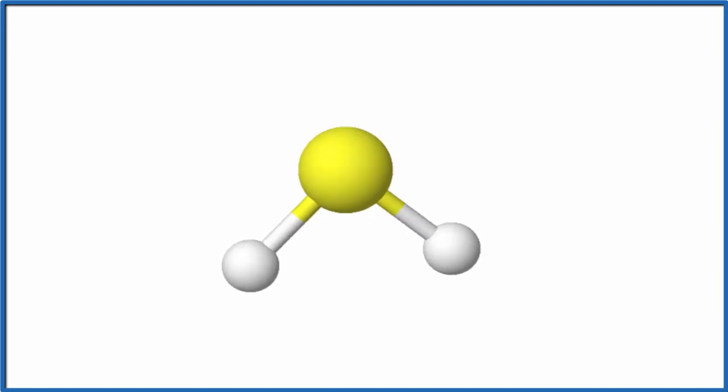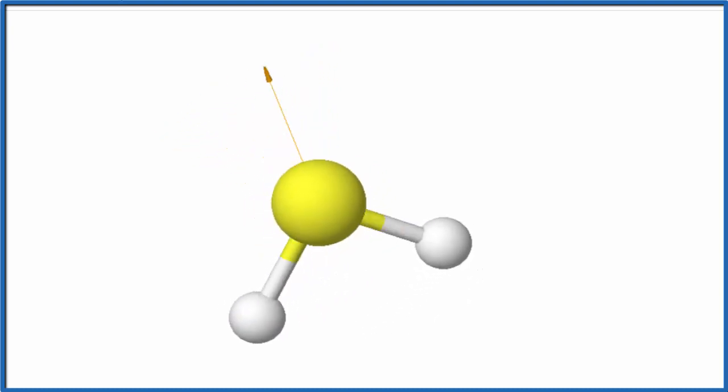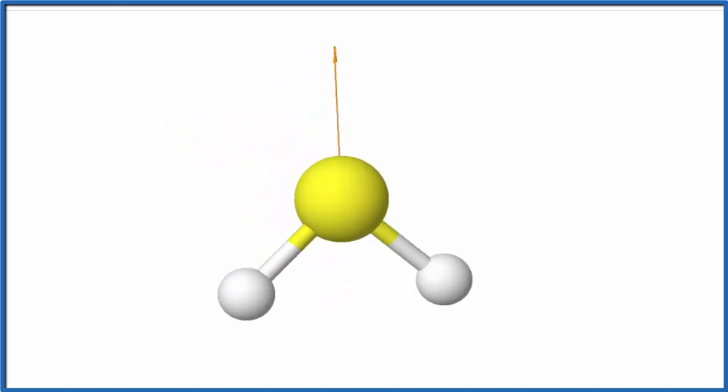Since it's bent, we're going to have our negative on top and our positive on bottom, like we talked about before, because of the electronegativity. We can visualize the dipole moment for H2S as this arrow that comes up through the central sulfur atom there and goes out the top. So it's pointing to the more negative area on the H2S molecule.